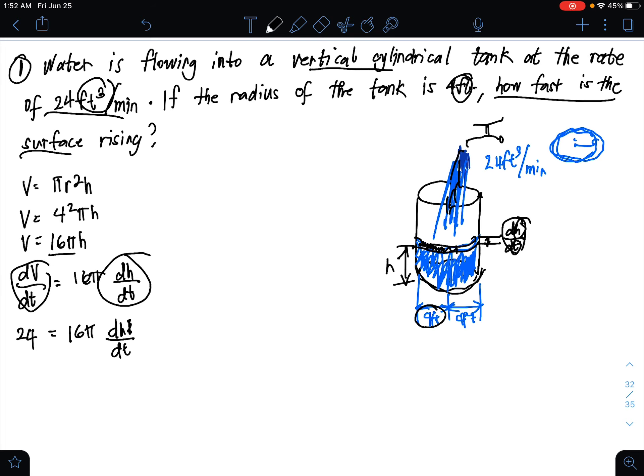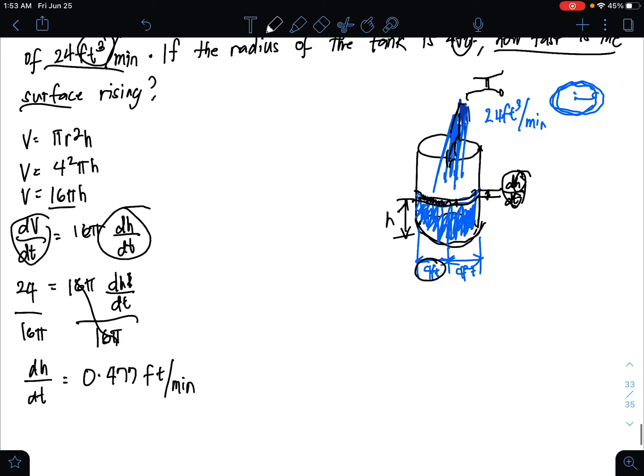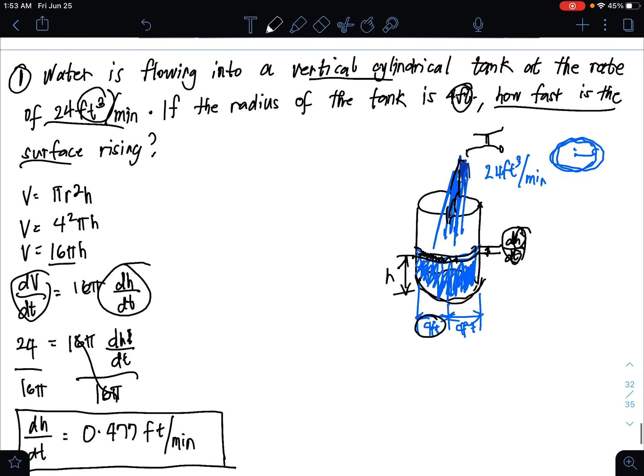Divide both sides by 16 pi. 24 over 16 pi, that would be 0.477 feet per minute. If the instruction in the exam is give the whole decimal numbers, then 0.47 until the end of the calculator. Follow the instruction.